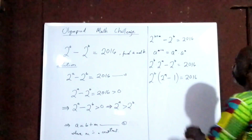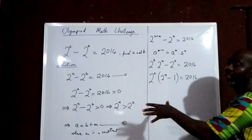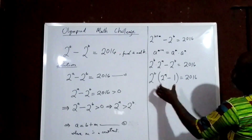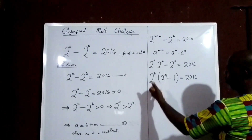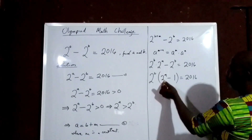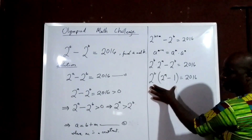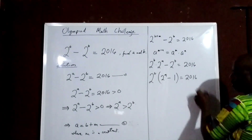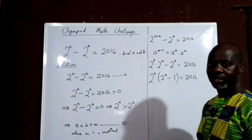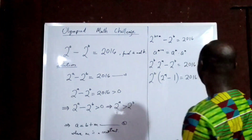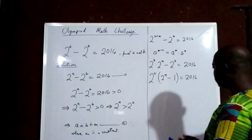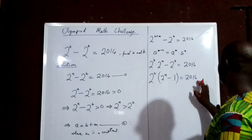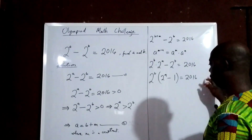Now, what we need to do — this involves indices — is to express 2016 also as a product. Because on the left-hand side we have a product: 2 to the power of B times (2 to the power of M minus 1). So we have to express 2016 as a product as well. We start by dividing by 2.